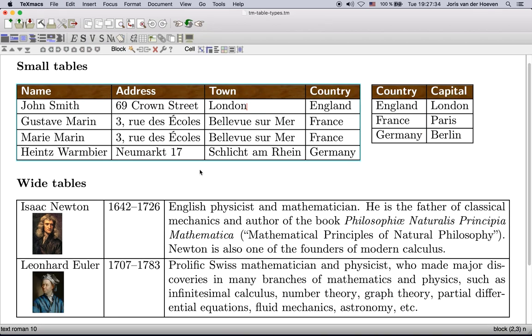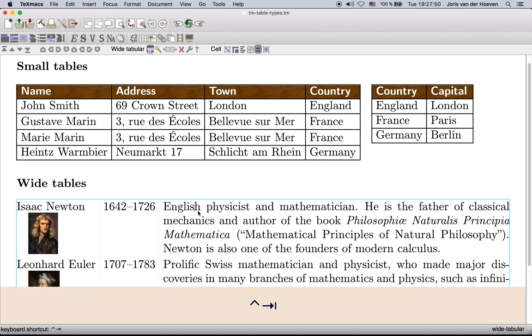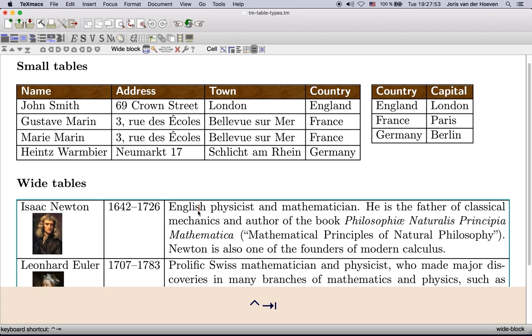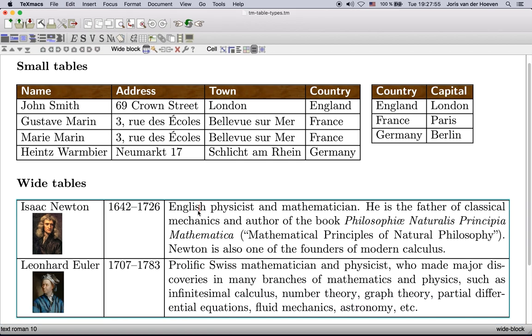The second major type of tables are the so-called wide tables. These ones span over the entire width of a paragraph. We again have the variants with and without borders. This time the width of the table is fixed, and the width of the individual cells are adjusted to fit into the table. This also means that line breaking is enabled for the text inside cells.